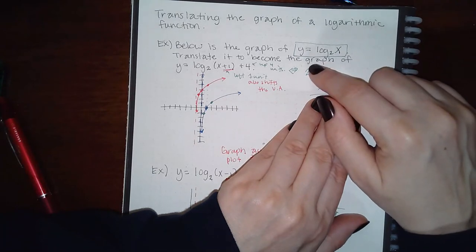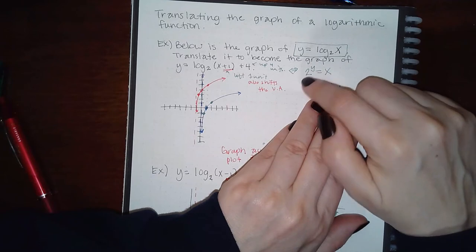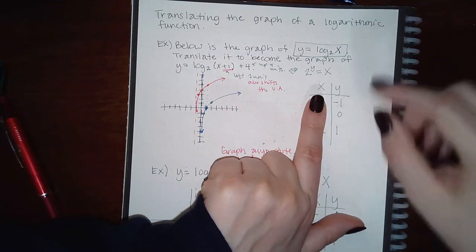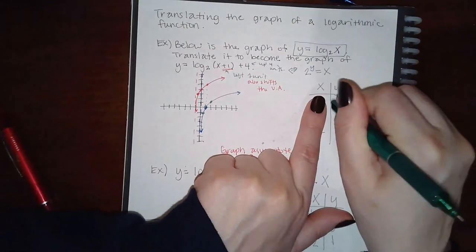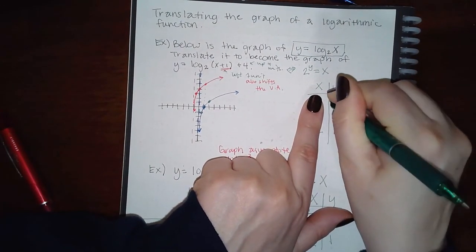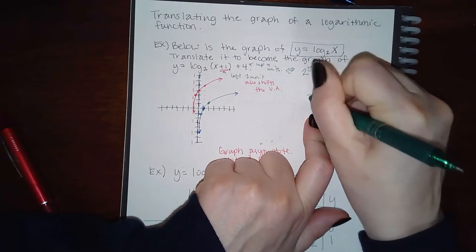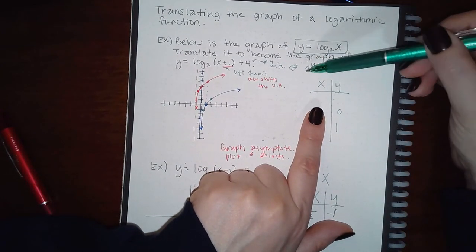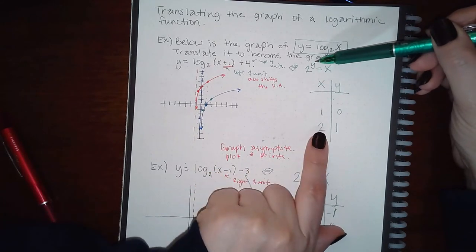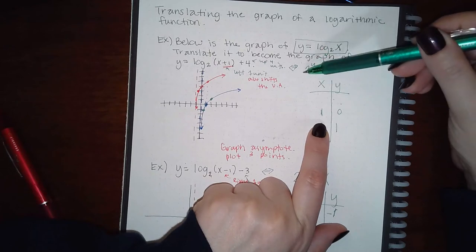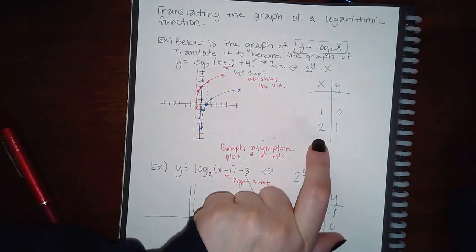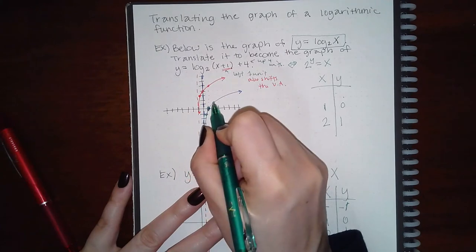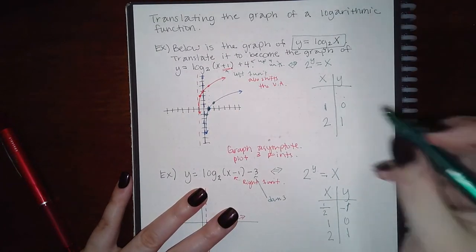I still can't plug in x values to find y, but I can plug in y values and do the exponential part to find x. The two values I use are 0 and 1. Any base to the exponent of 0 equals 1, and any base to the exponent of 1 equals that base. So my two points are (1, 0) — the point they gave me — and (2, 1).